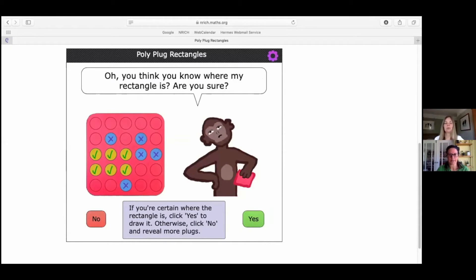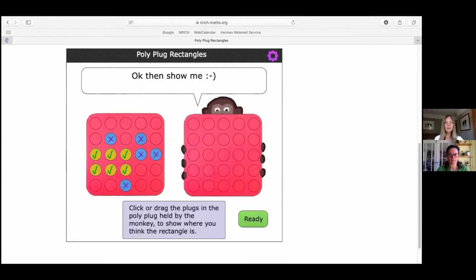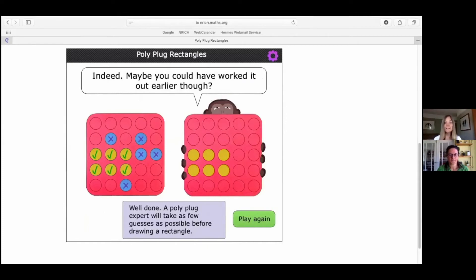So if you're certain we click yes. Right. Let's click certain. Okay, then show me. Right. So I think now we're going to have to fill in the rectangle on this right-hand grid. Let me just check I've got that in the right place. I think so. Okay. Ready. Monkey says, indeed.